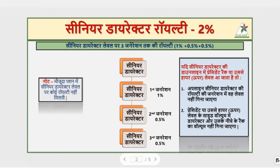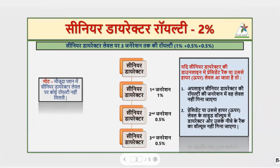So I will explain this to you: if you are a Senior Director or a Royal President, you will not be able to lose your generation. Wherever you are a Senior Director, you will be able to build your generation. You are seeing Senior Director here at 1%, Senior Director at about half percent, and from the third generation you are seeing a half percent.